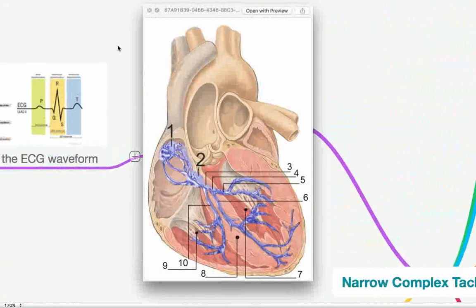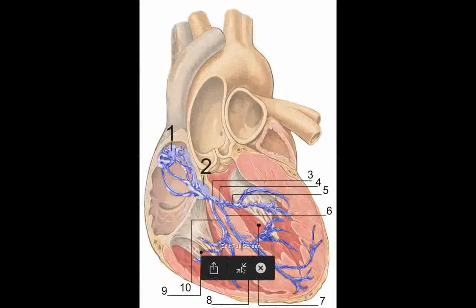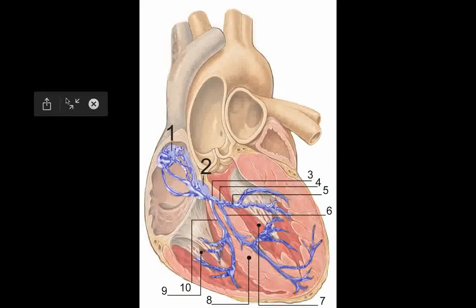Quick review of the conduction system of the heart before we begin. Try and pause this and see how many of these numbers you can name off. Sinoatrial node going down to the atrioventricular node, little bundle of His here, bifurcating into the right bundle branch, the left bundle branch. Left bundle branch has a posterior fascicle and an anterior fascicle. All of this terminates into Purkinje fibers which innervate the myocardium of the ventricles.